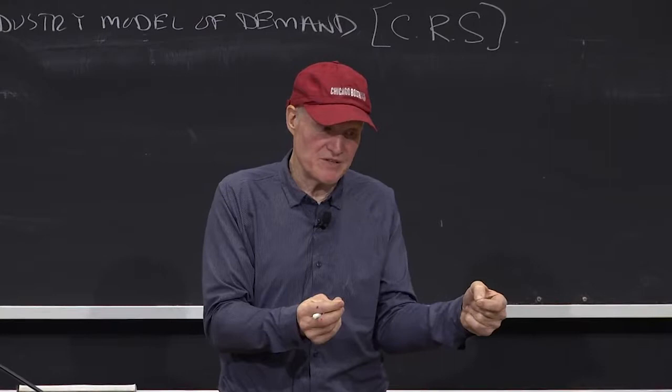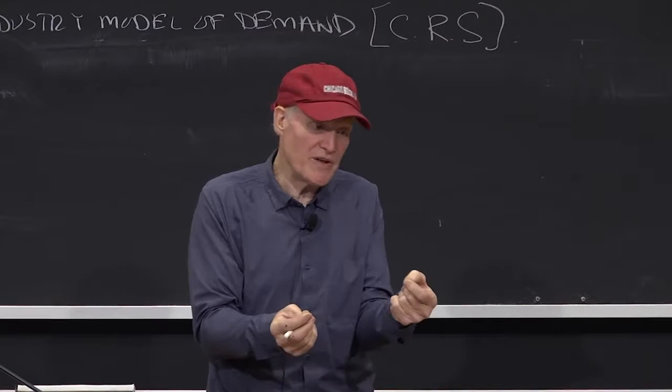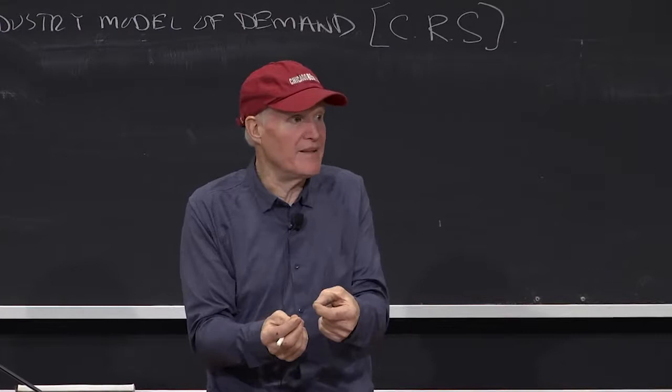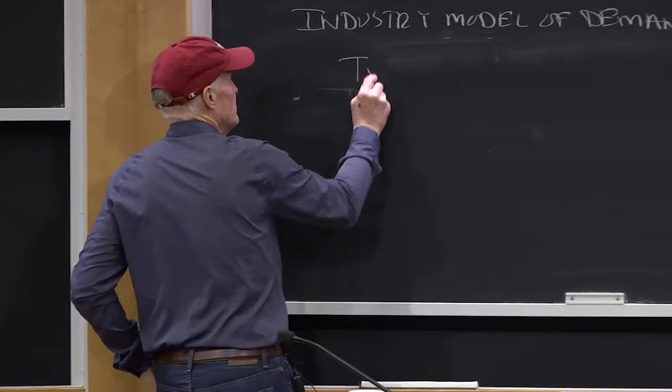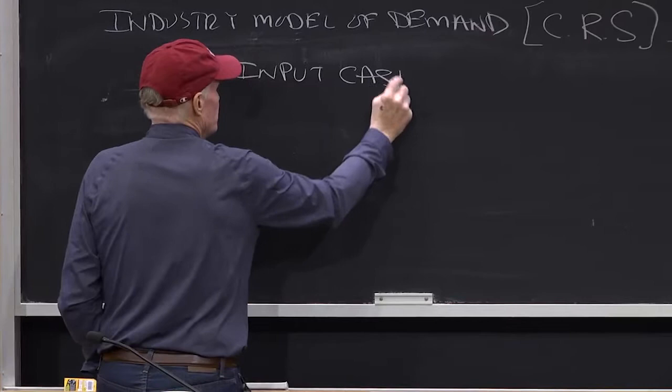Those are two arguments that get you to industry analysis with constant returns-to-scale. If you start with constant returns-to-scale, you're pushed toward the industry level to find the equilibrium. Or you could say, even if I don't have constant returns-to-scale at the firm level, I might approximate it at the industry level. So if I'm interested in industry, I'm going to assume constant returns-to-scale. We'll do the two-input case to make life relatively easy.